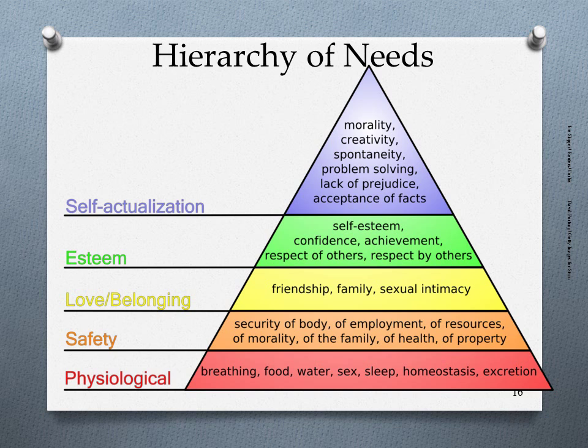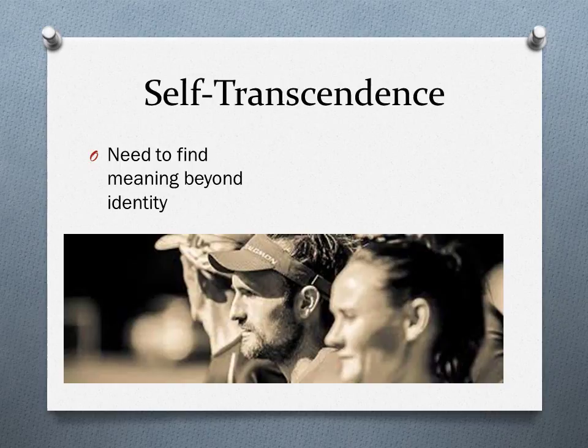Maslow argued that after self-actualization, once you've figured out who you are and some goals have been met, some people believe they need to surpass that — called self-transcendence. It's the need to find meaning beyond one's identity: where do I go from here, what else is out there? After coming out with his original theory, Maslow believed, like the Buddha, one might go beyond self-identity.